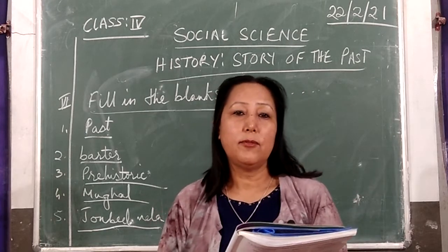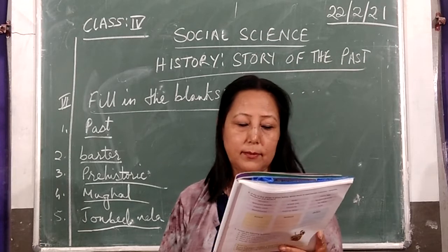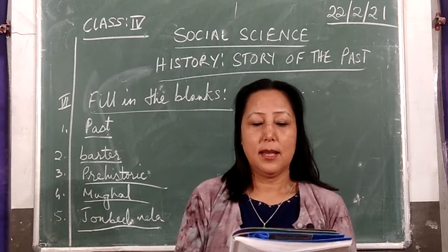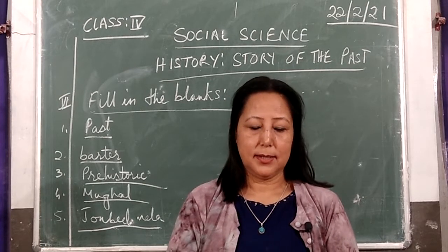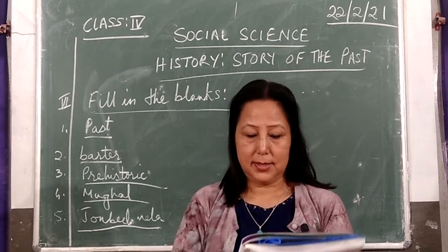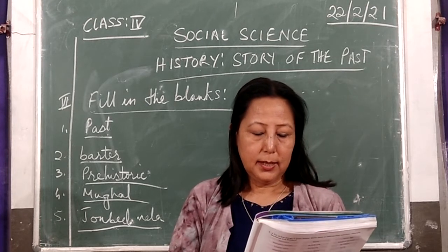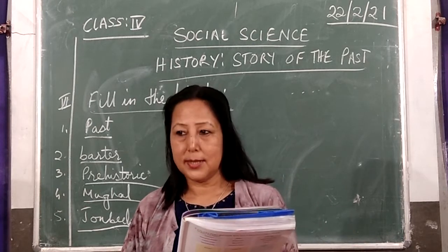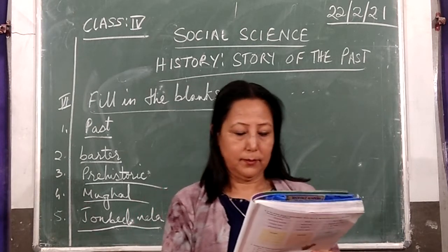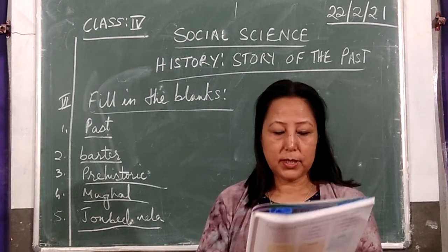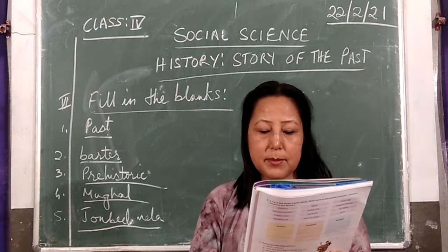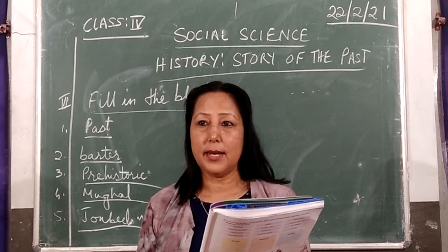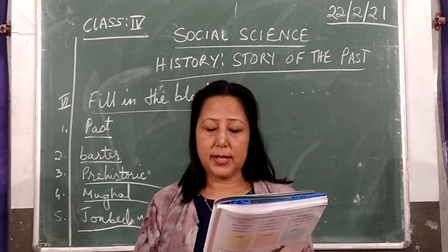Now number three, fill in the blanks. A — history is the story of the past, isn't it? So you will write 'past.' B — people exchange goods for other goods in which system? Barter system. C — ancient period comes after which period? Pre-historic time. Write down pre-historic time.